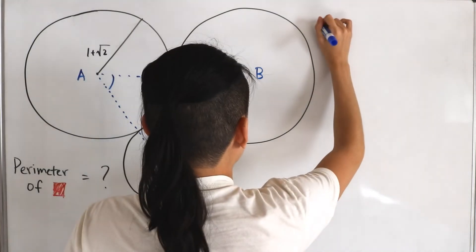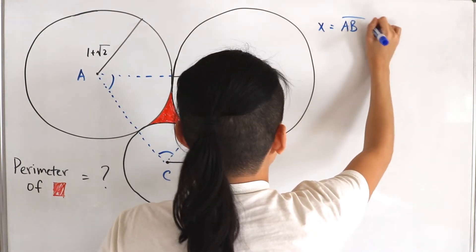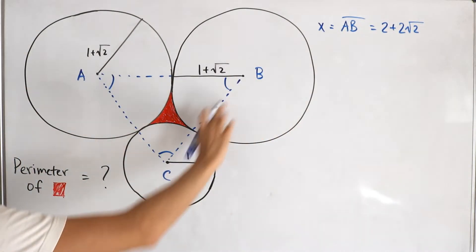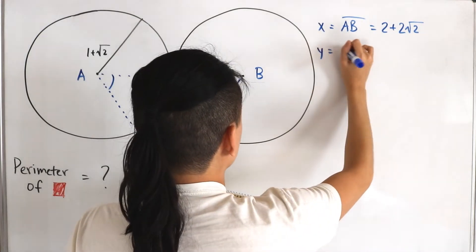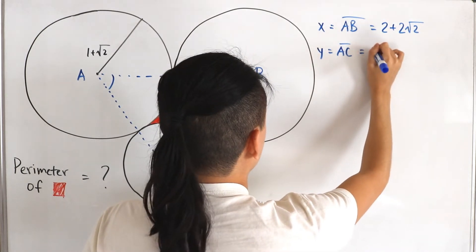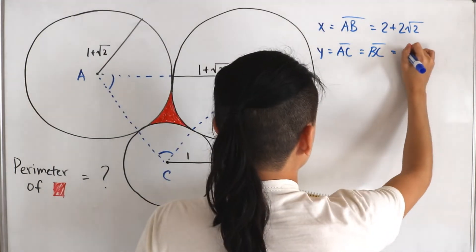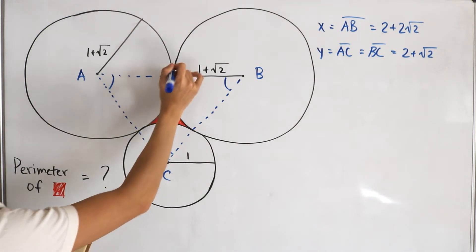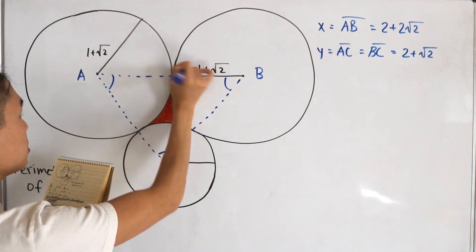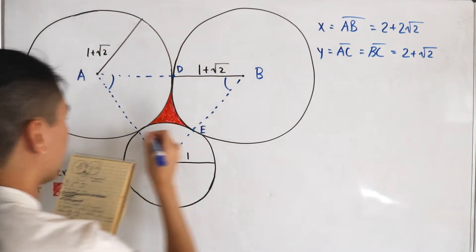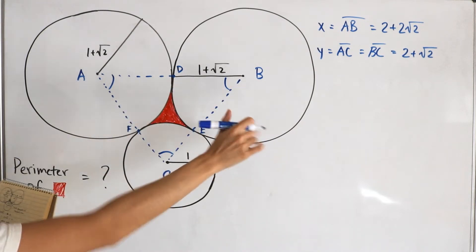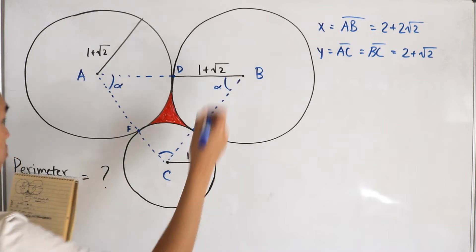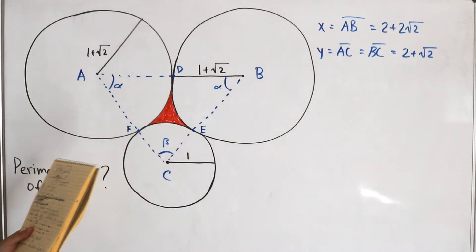Let's call x equal to line segment AB. Adding up the two radii gives us x equals two plus two times the square root of two. We'll call y equal to line segments AC and BC, which equals two plus the square root of two. Now let's label the points where the circles are touching each other: point D, point E, and point F. For the angles of this isosceles triangle, we have alpha at two of the vertices and beta at the third.